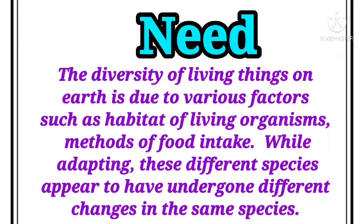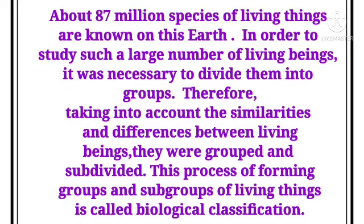The diversity of living things on earth is due to various factors such as the habitat of living organisms and methods of food intake. While adapting, these different species appear to have undergone different changes. About 87 million species of living things are known on this earth.